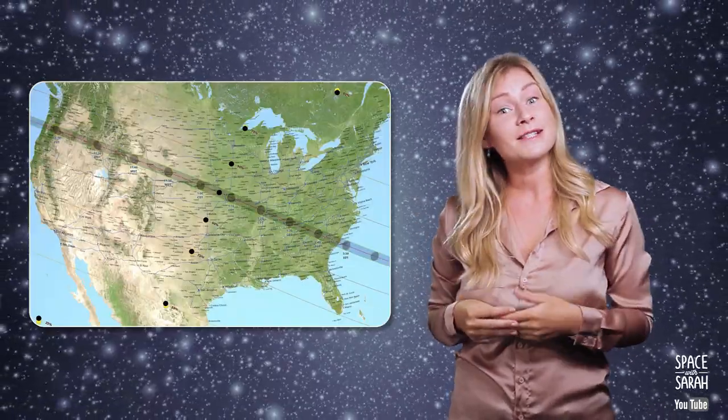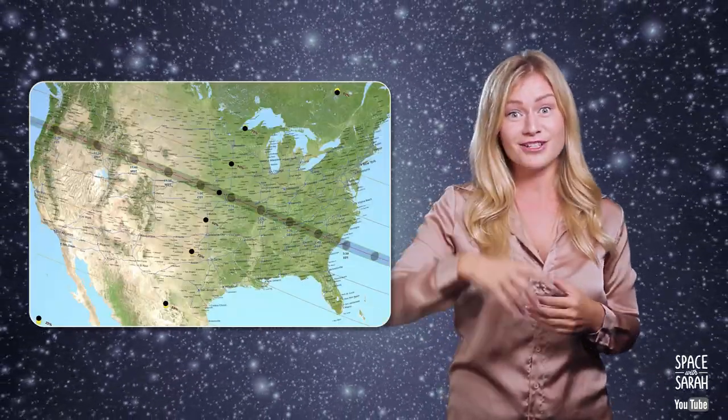We can only see an eclipse because the sun and the moon appear to be the same size on the sky. How cool is that coincidence? Be sure to check out the eclipse if you're in its path, and don't forget to protect your eyes.